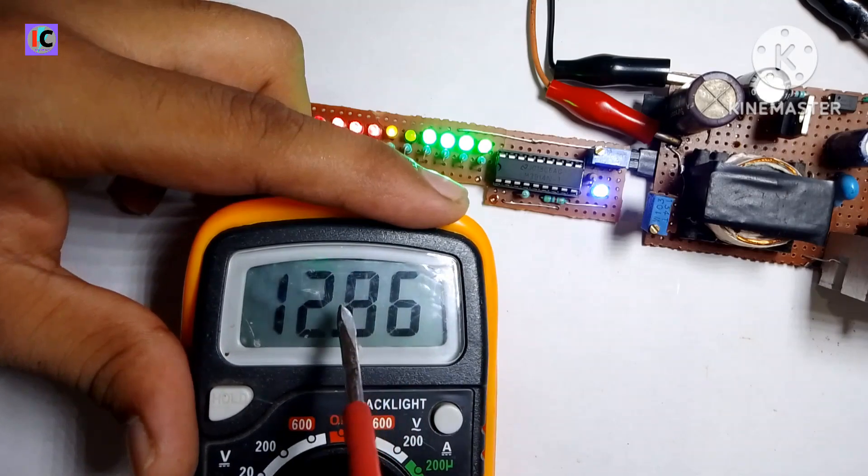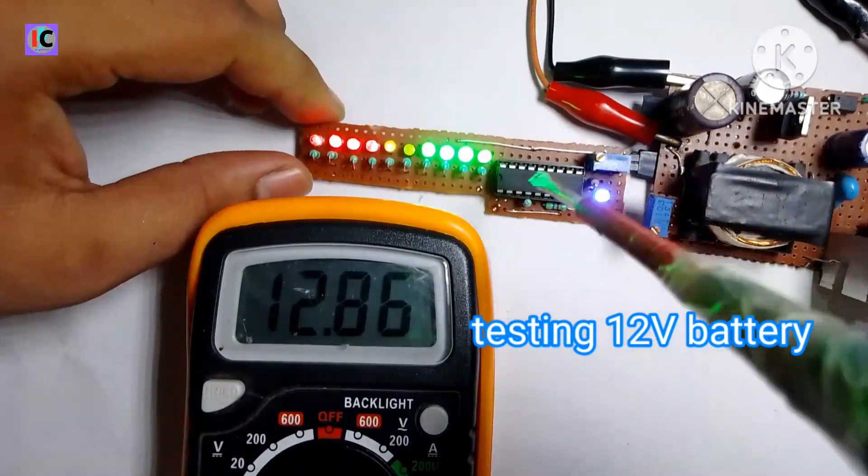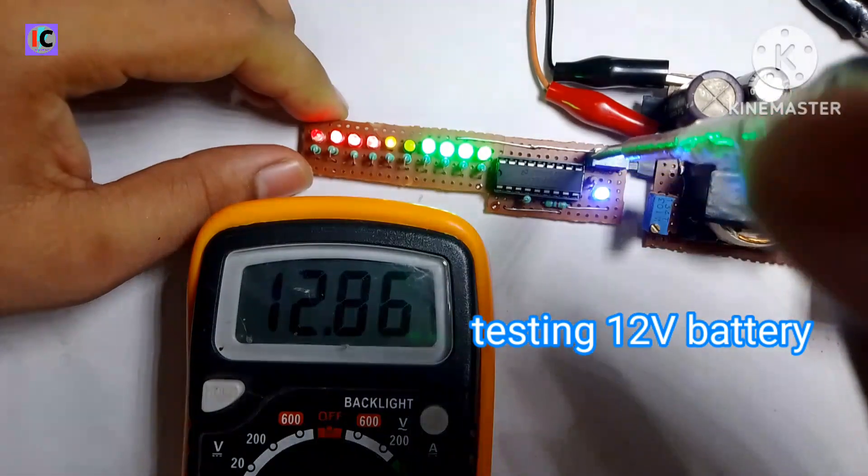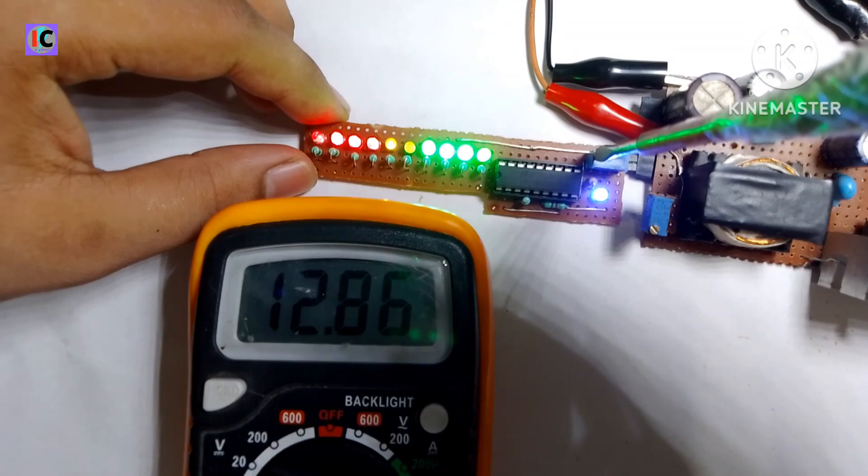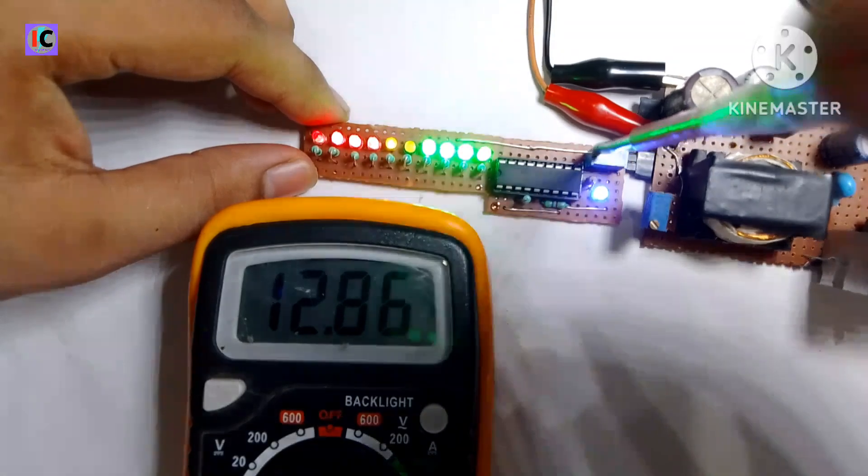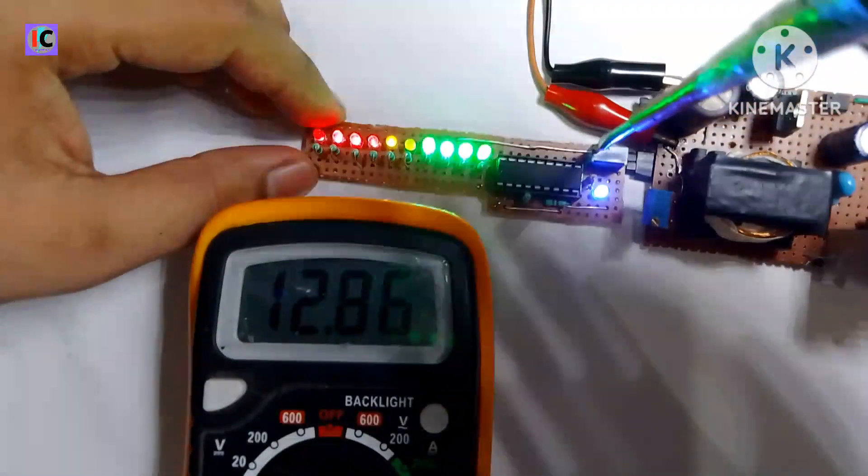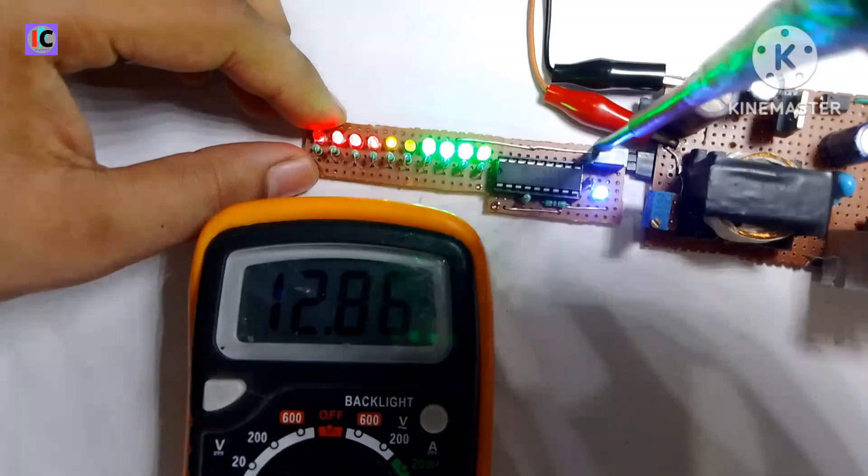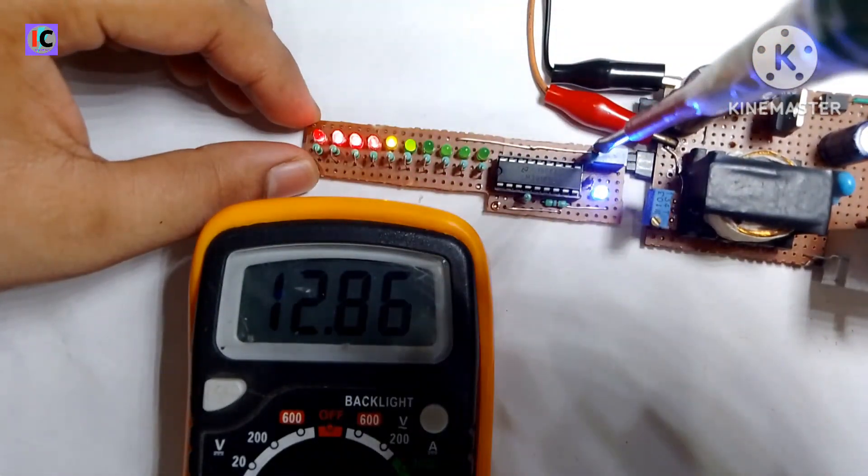I have set the output voltage to almost 12.0 volts. This is the full charge voltage of a 12 volt lithium or lead acid battery which is used in inverters. Now I have calibrated this module with 12 volt lead acid battery for indicating the 12 volt battery voltage.